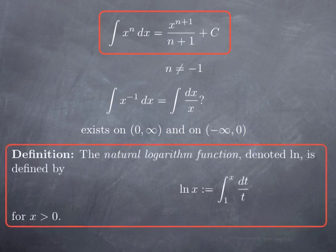The natural logarithm function by definition is one particular anti-derivative of 1 over x — namely, it is given by the integral from 1 to x of 1 over t dt. In this definition we assume that x is positive; in other words, we are looking at an anti-derivative of 1 over x on the interval (0, ∞), on the positive interval.